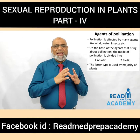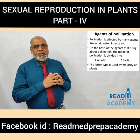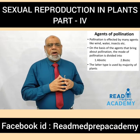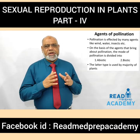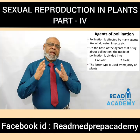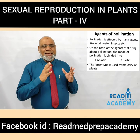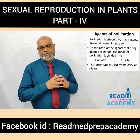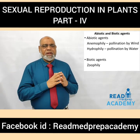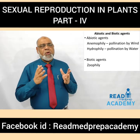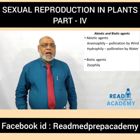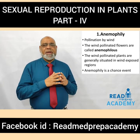What are the agents of pollination? Pollination is affected by many agents like wind, water, insects, etc. On the basis of the agents that bring about pollination, the mode of pollination is divided into abiotic pollination and biotic pollination. The latter type is used by the majority of plants. The abiotic agents are: anemophily — pollination by wind, and hydrophily — pollination by water. The biotic agents are called zoophily.